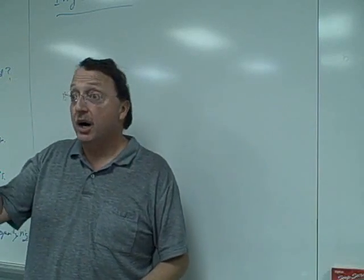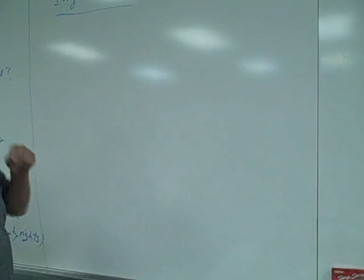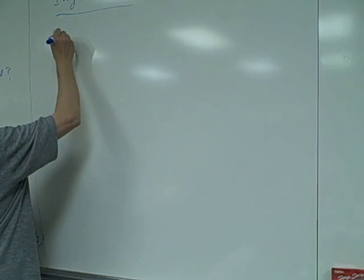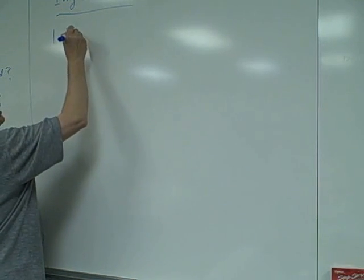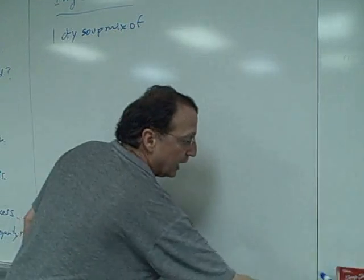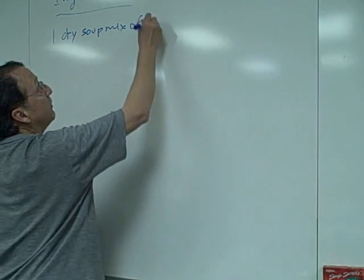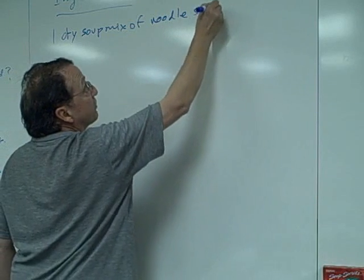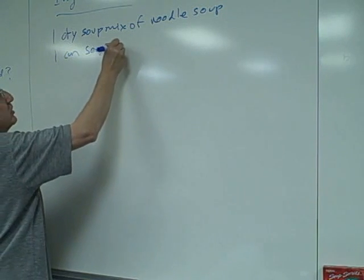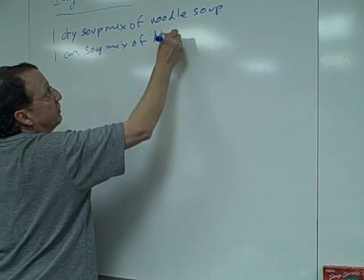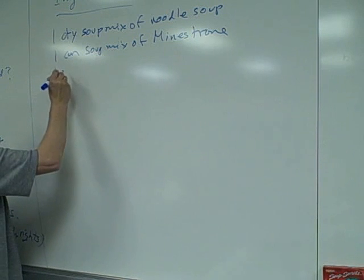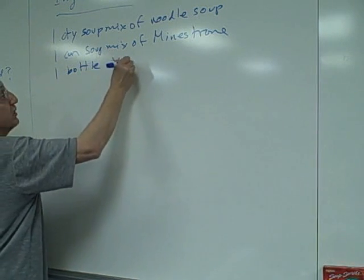And we happen to have a bottle of four cups of water. In terms of ingredients, we have one dry soup mix of noodle soup, one can of soup mix of minestrone, and one bottle with four cups of water.